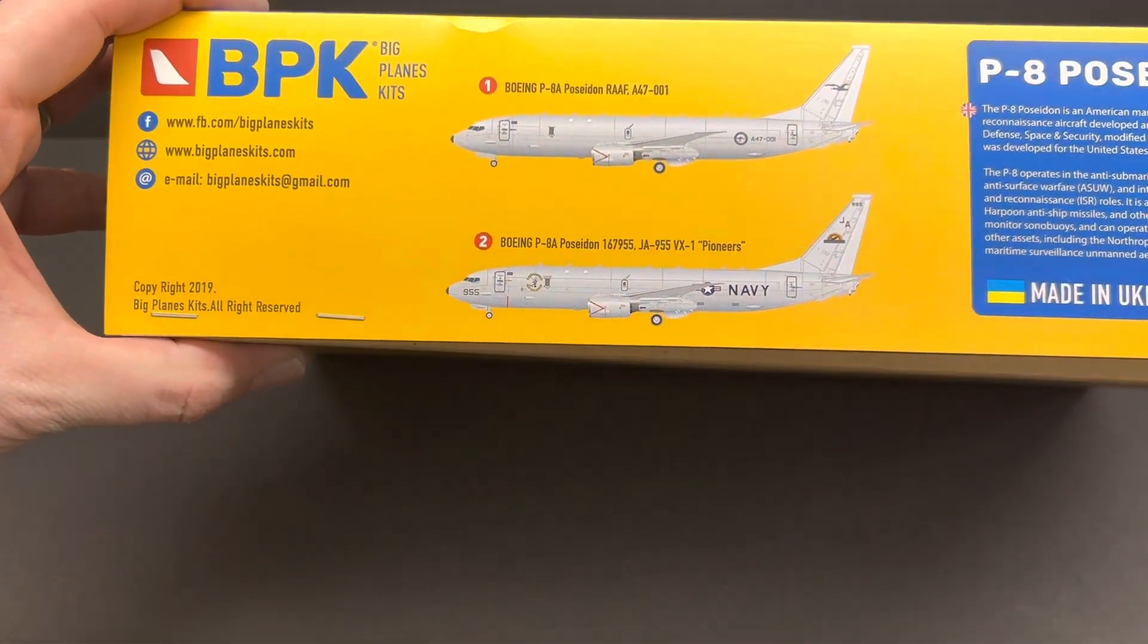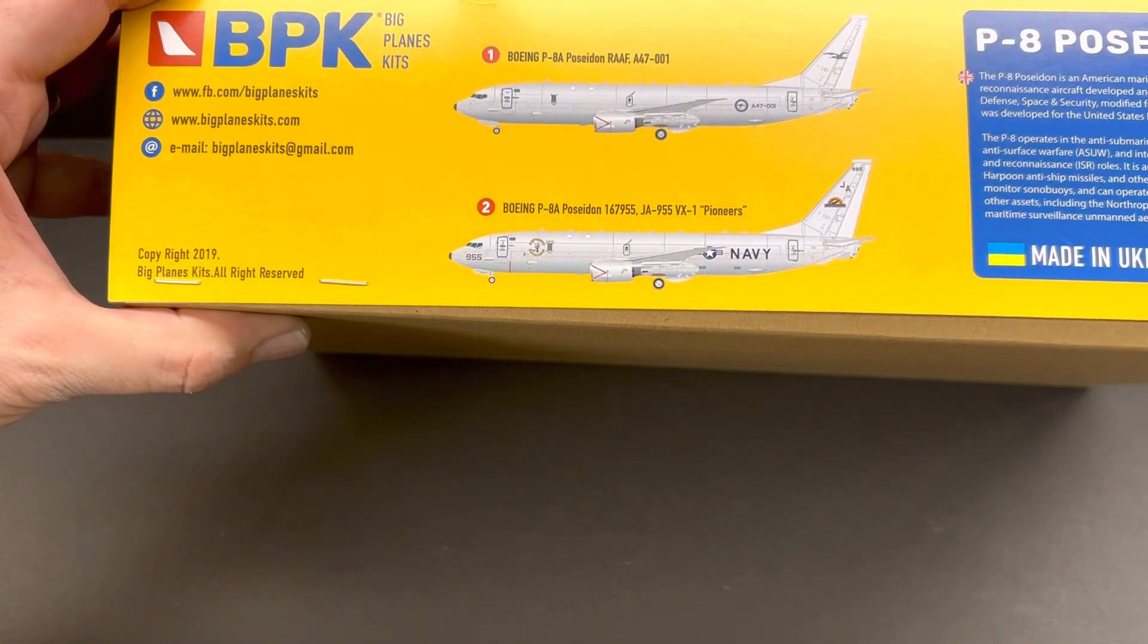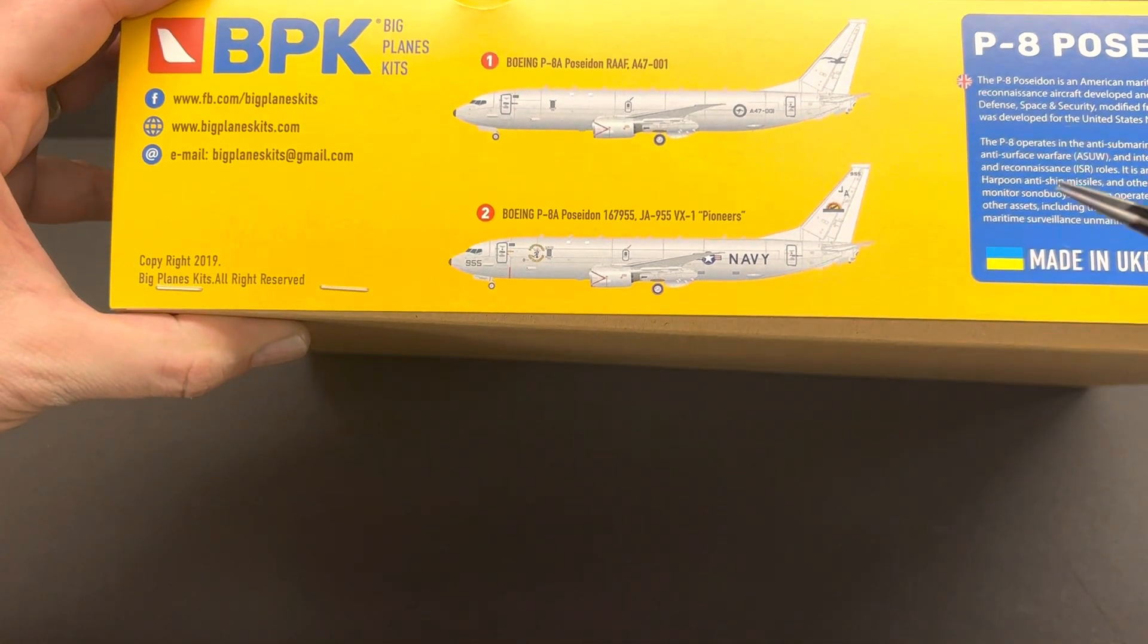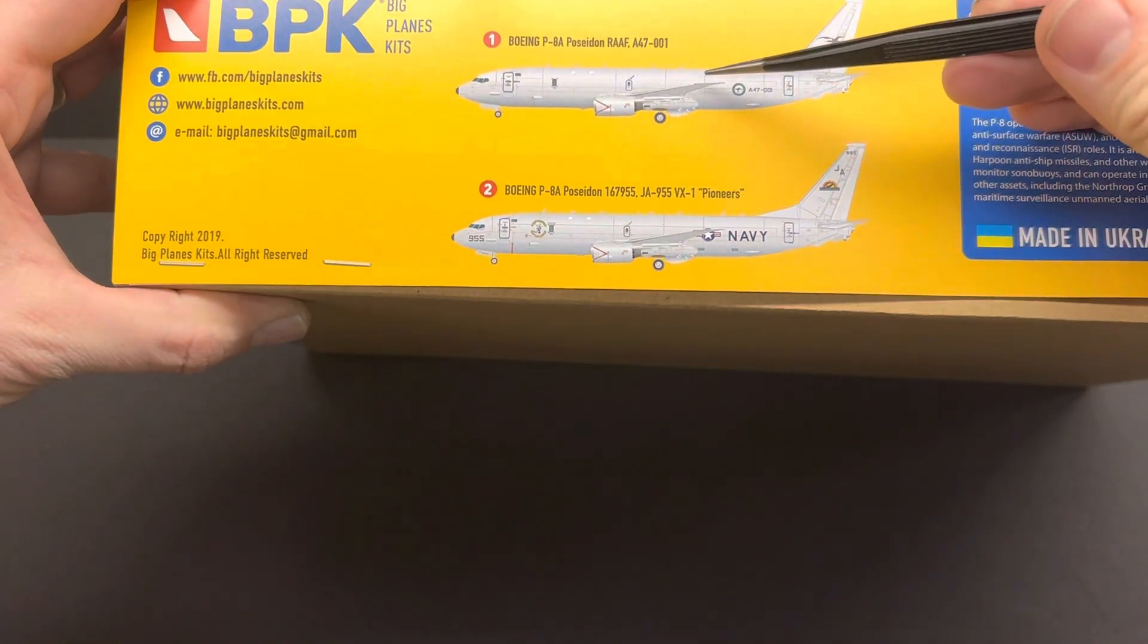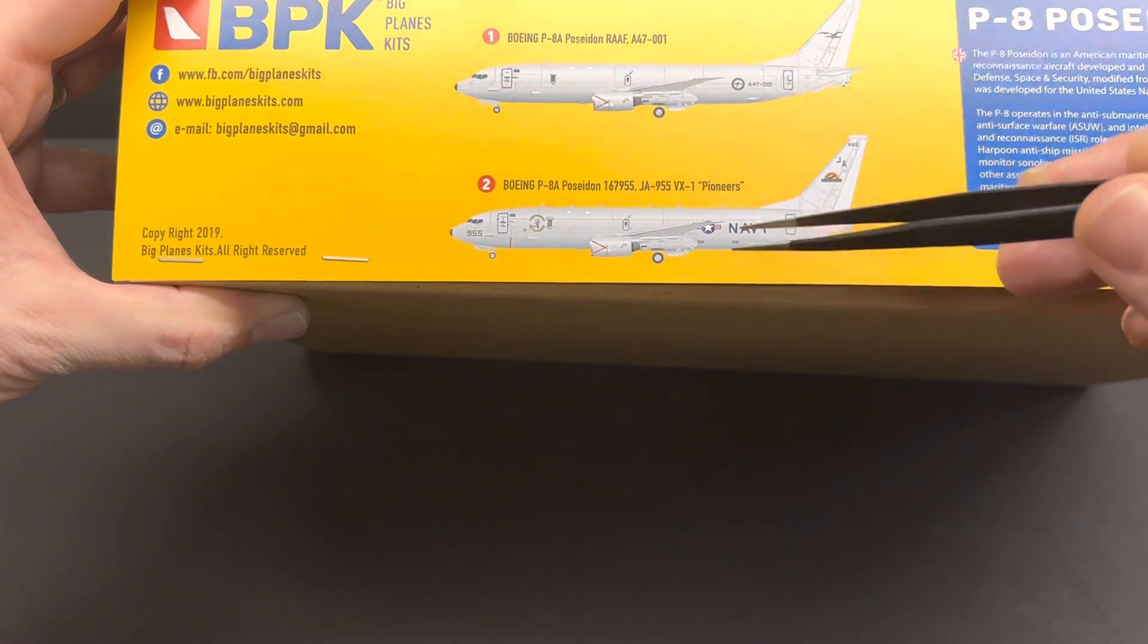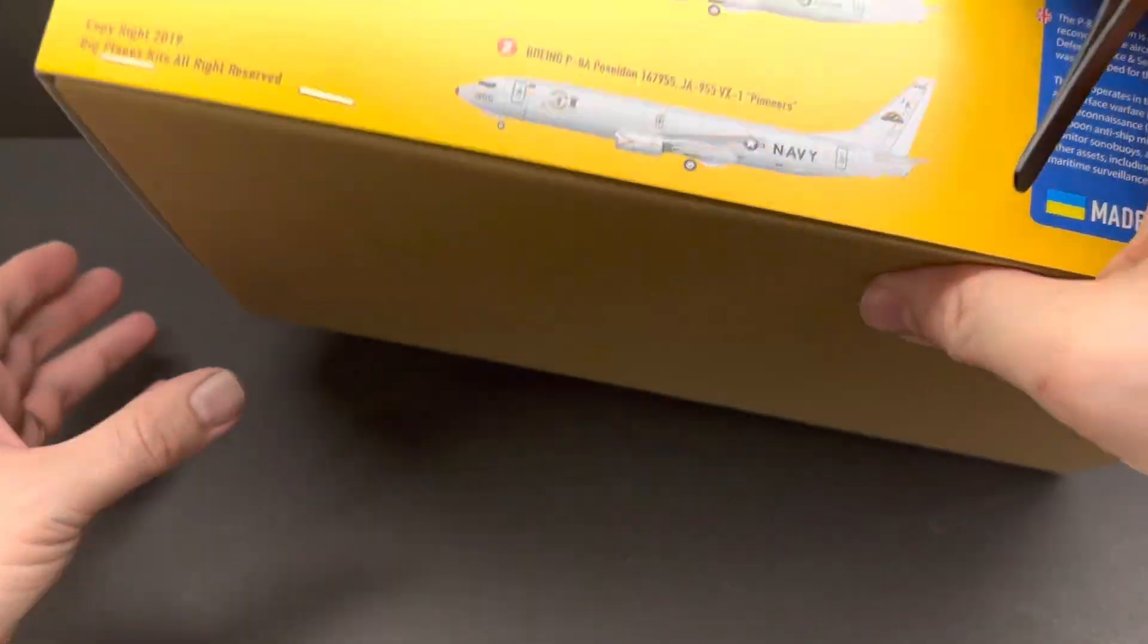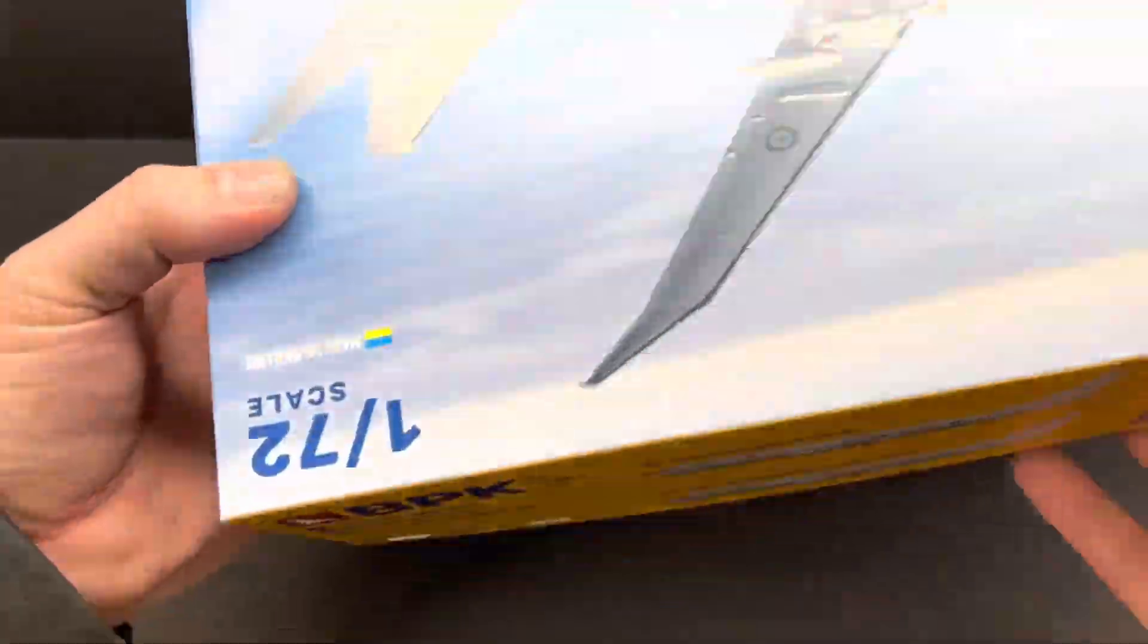It talks about the P-8, what it does. If you're not familiar with the P-8, P-8 is an anti-submarine warfare search and rescue maritime patrol aircraft. And so basically we've got ourselves an armed 737. So pretty cool. It comes with decals for the Royal Australian Air Force and the United States Navy with VX-1 Pioneers, which is out of Pax River for testing.